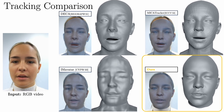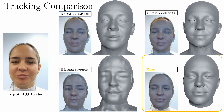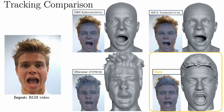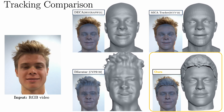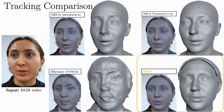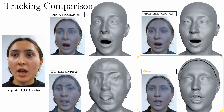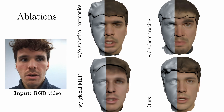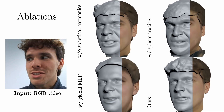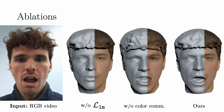We compare tracking performance on commodity monocular RGB video, as shown on the left. We show our reconstructed geometry and an overlay in image space. Furthermore, we ablate several of our design choices — in particular, the use of spherical harmonics and volume rendering are important. Without the landmark loss, some expressions are completely missed.